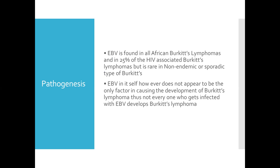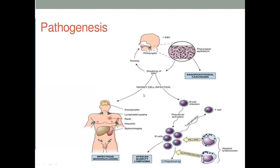EBV itself does not appear to be the only factor causing the development of Burkitt's lymphoma — not everyone who gets infected with EBV develops Burkitt's lymphoma. In terms of pathogenesis, once you get EBV, there will be shedding of EBV which will affect your B cells, leading to polyclonal B cell activation, and that is going to lead to African Burkitt's lymphoma.